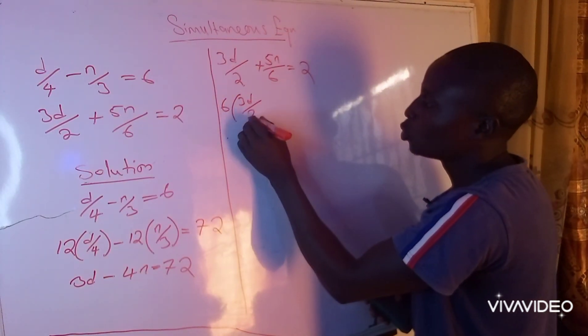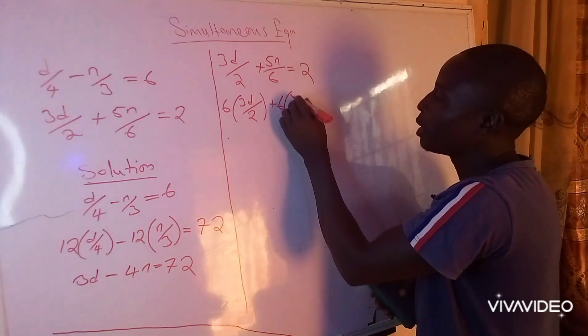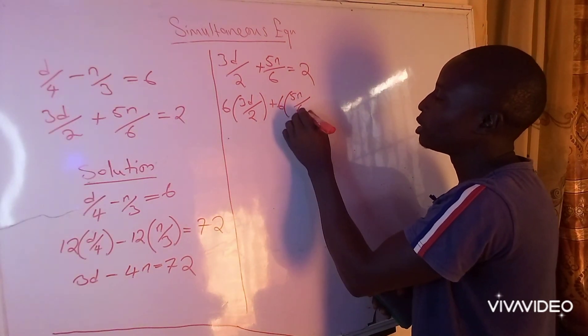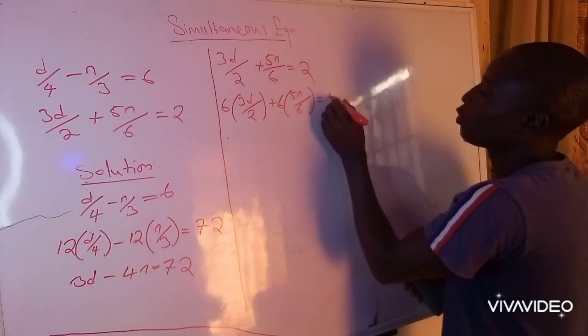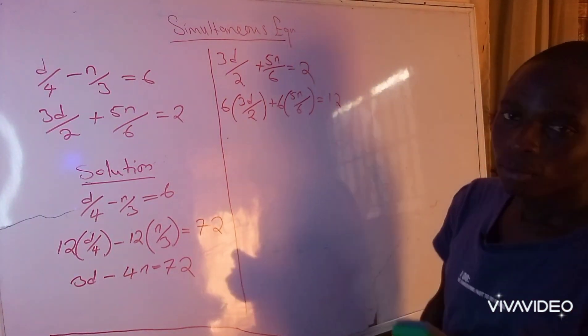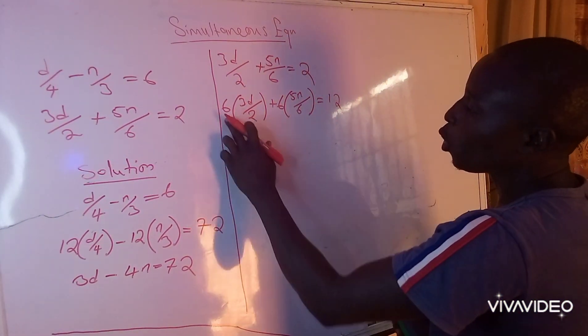That means 6 multiplying 3d over 2 plus 6 multiplying 5n over 6 equals 6 multiplying 2, of course it's 12. I think it's not difficult, it's very easy, very simple.